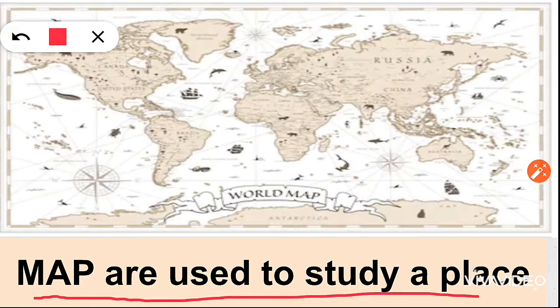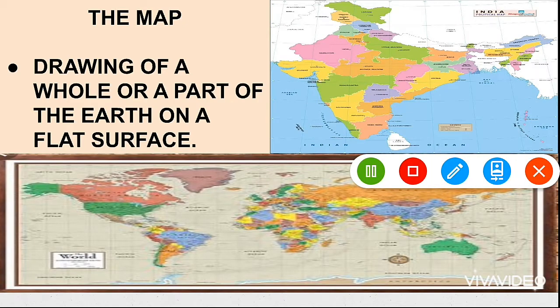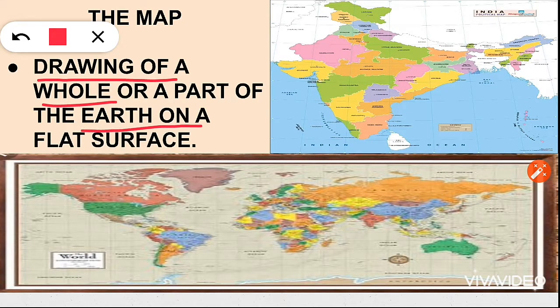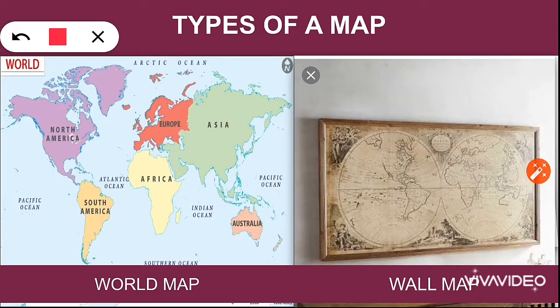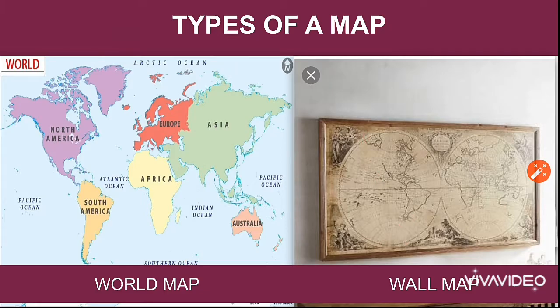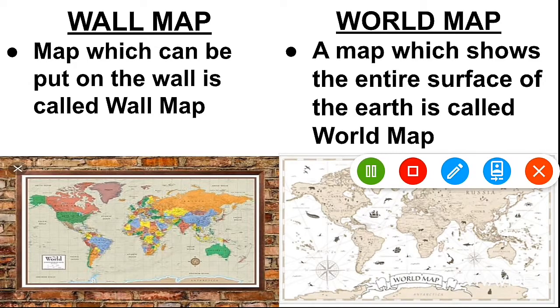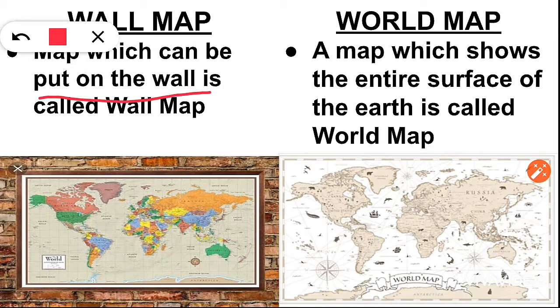They started using maps to study earth places. Let us see what is a map. A map is a drawing of a whole or a part of the earth on a flat surface. There are many types of maps, but in your book, you will study about two: wall map and world map. A wall map is one which you can put on the wall, and a world map is one which shows the entire surface of the earth.